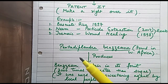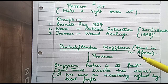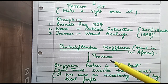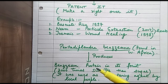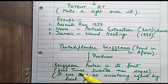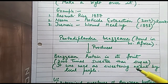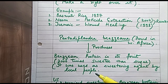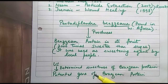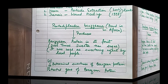Another example of biopiracy involves the plant Pentaediplandra brazzeana, found in West Africa. This plant produces a protein called brazzein, found in its fruits. This protein is 2,000 times sweeter than table sugar and acts as a sweetening agent. Local people have traditionally used it.